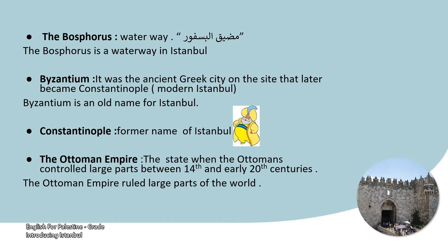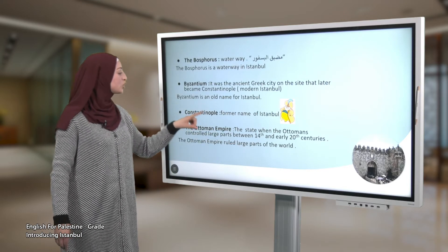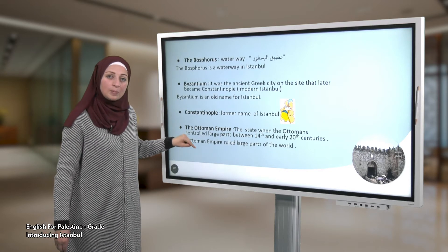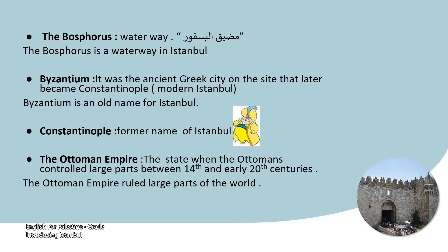Example: the Bosphorus is a waterway in Istanbul. Byzantium was the ancient Greek city on the site that later became Constantinople, modern Istanbul. Example: Byzantium is an old name for Istanbul. Constantinople is also a former name of Istanbul. So Byzantium and Constantinople are both former names of Istanbul. The Ottoman Empire was the state when the Ottomans controlled a large part of the world between the 14th and early 20th centuries.